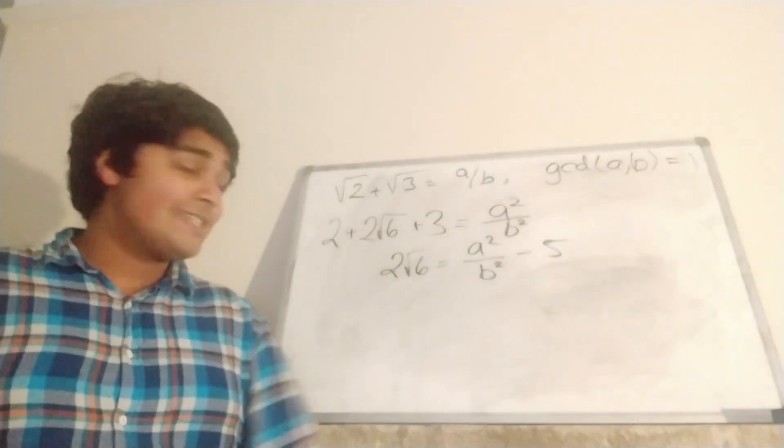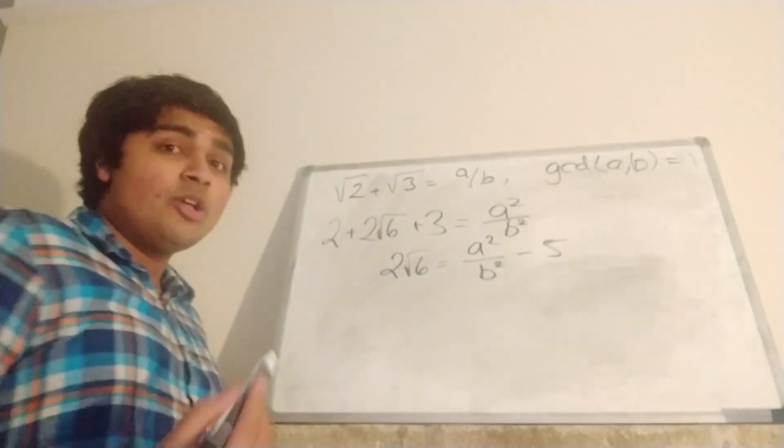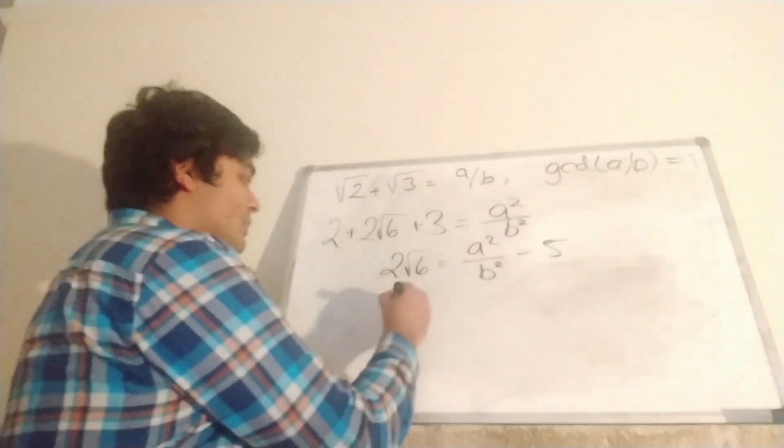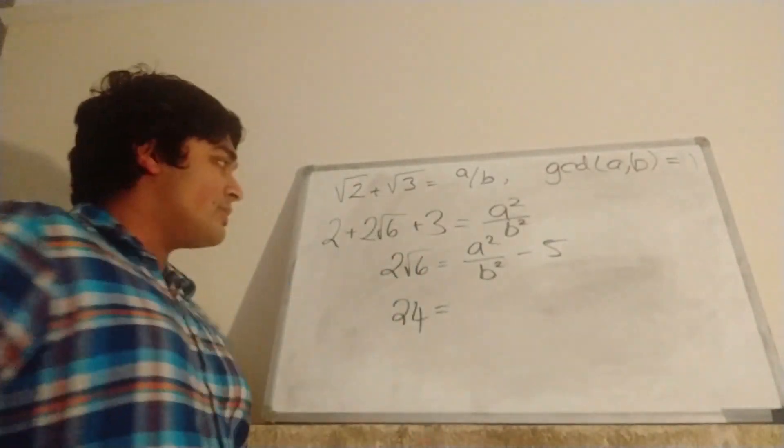Then I want to square both sides again. So on this side I've got 2√6 all squared, so that's 4 times 6, so 24.